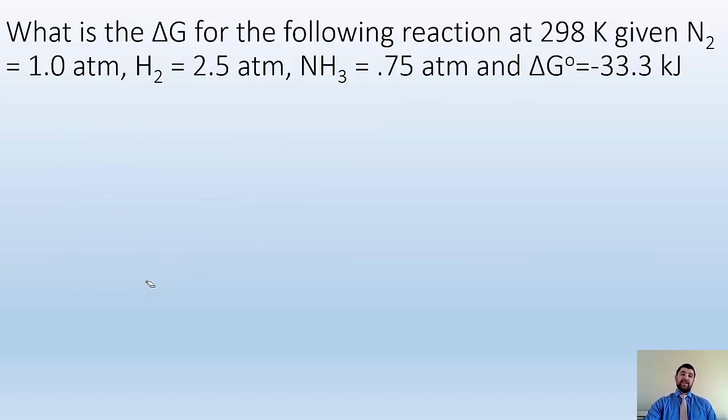So example problem. What is the delta G for the following reaction at 298 Kelvin given N2 equals one atmosphere, H2 equals 2.5, and NH3 equals 0.75 atmospheres? And the delta G naught is minus 33.3 kilojoules. And that's the equation.